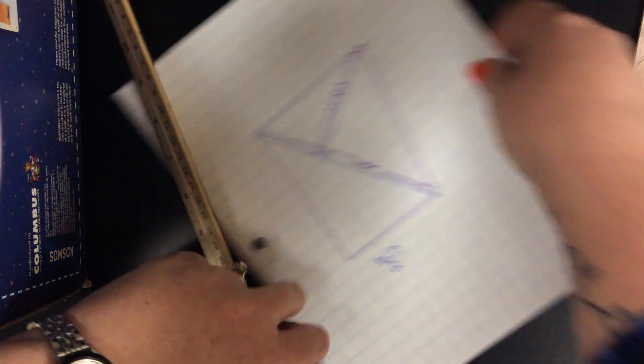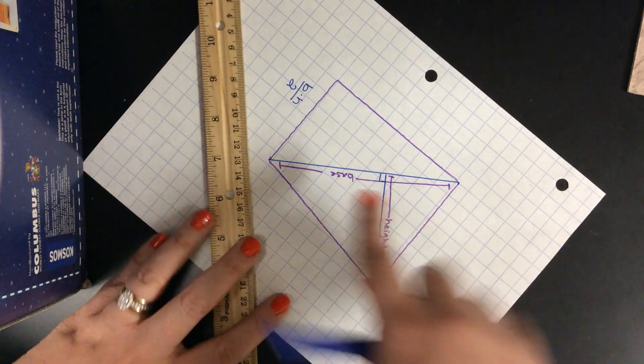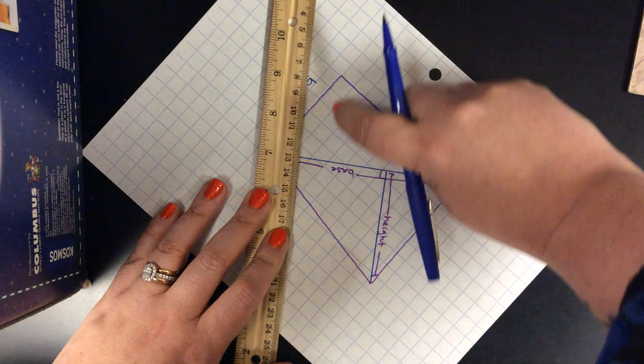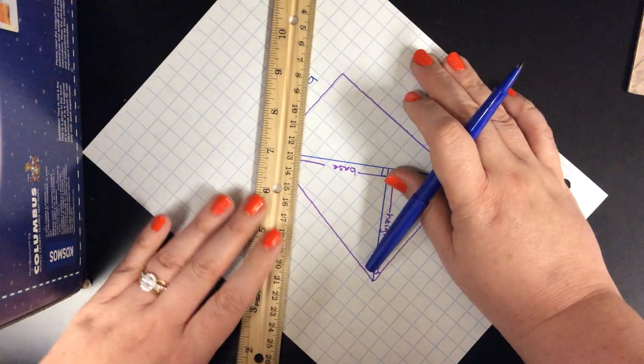I would then do the exact same thing with the other triangle. I want to draw a perpendicular line from the base to that corner.